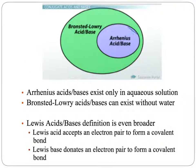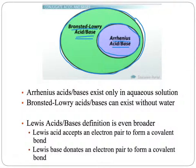The Arrhenius definition for acids and bases can be thought of as a subset of the Bronsted-Lowry definition, because every Arrhenius acid or base is also a Bronsted-Lowry acid or base. But there are some substances that act like acids and bases that do not have hydroxide ions and do not fit the Arrhenius definition. Arrhenius acids also exist only in aqueous solutions as part of the definition, whereas Bronsted-Lowry acids and bases can exist without water. There actually is a third, even more broad definition — the Lewis acid and base definition — which isn't even mentioned in your book.